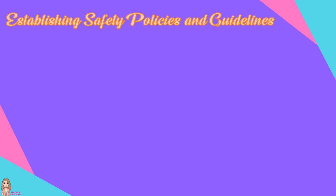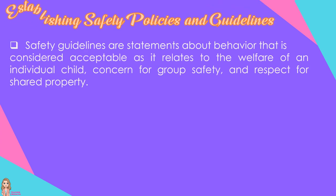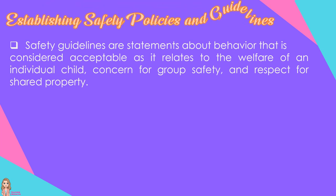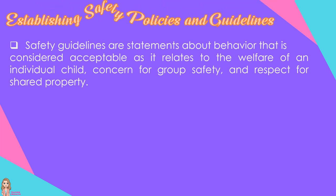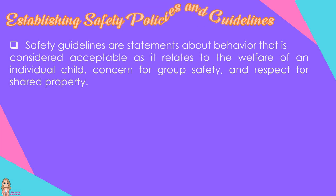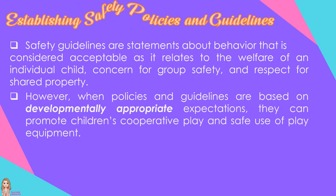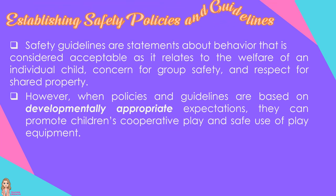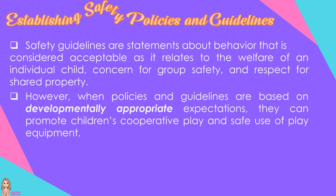Establishing safety policies and guidelines: Safety guidelines are statements about behavior that is considered acceptable as it relates to the welfare of an individual, concern for group safety, and respect for shared property. Too often, guidelines only inform children about what they should not be doing, leaving unclear what behaviors are valued or considered acceptable. However, when policies and guidelines are based on developmentally appropriate expectations, they can promote children's cooperative play and safe use of play equipment.